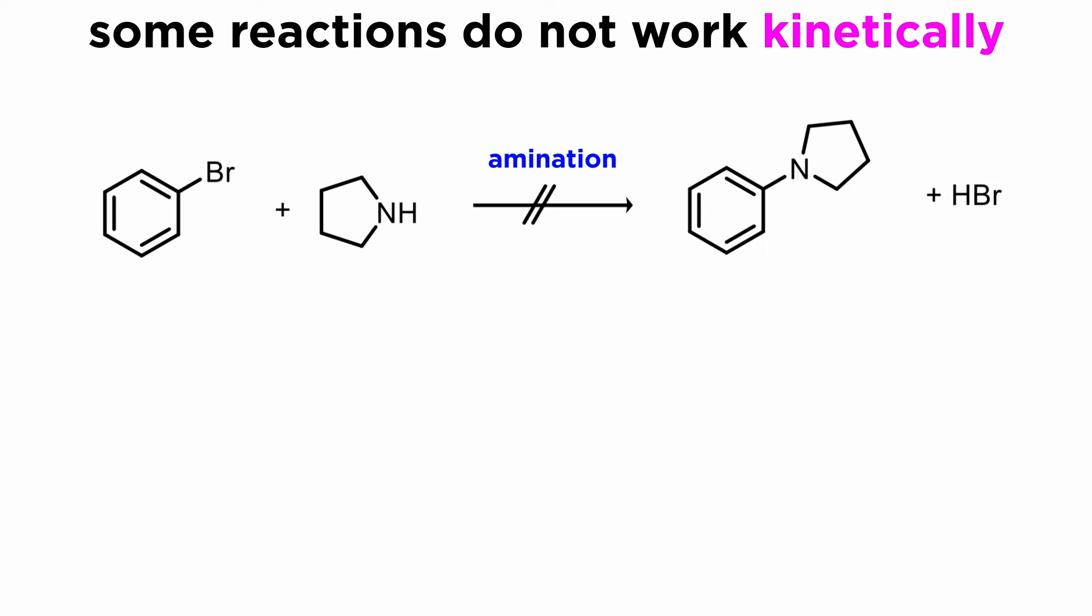An example would be the amination of an aryl halide. If you try to heat pyrrolidine and bromobenzene, you will not get the amination product under thermal conditions. There just isn't any kinetically feasible pathway for these two molecules to react, even though the process is thermodynamically favorable.